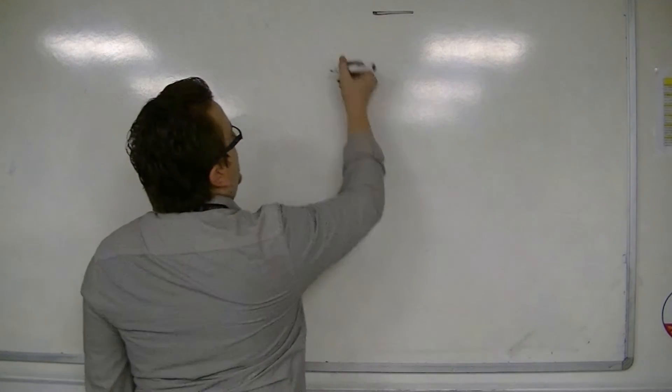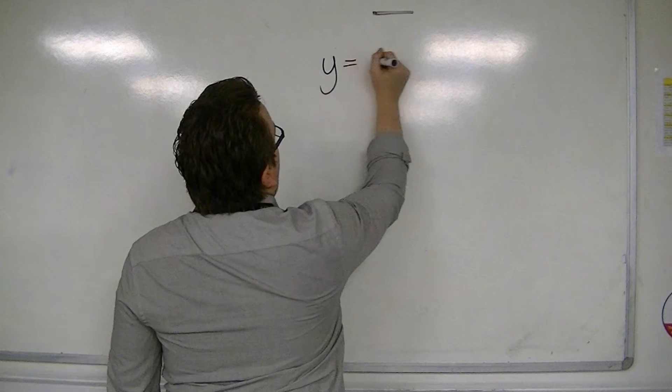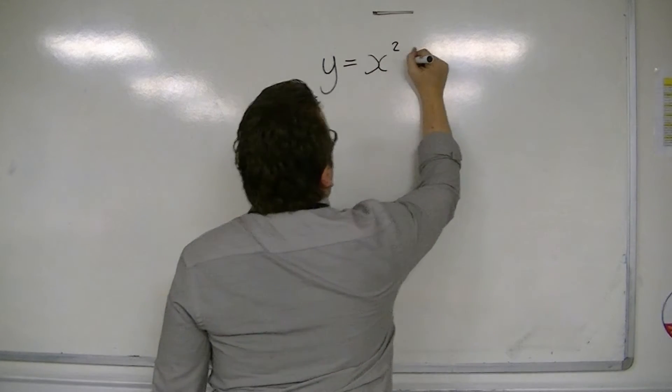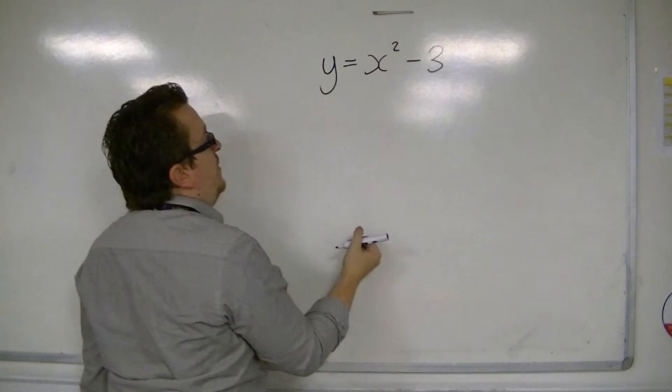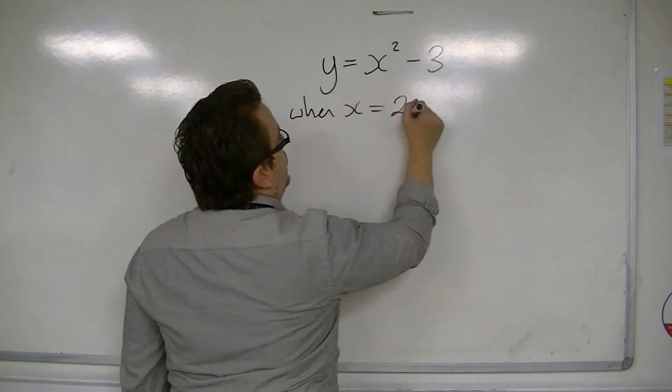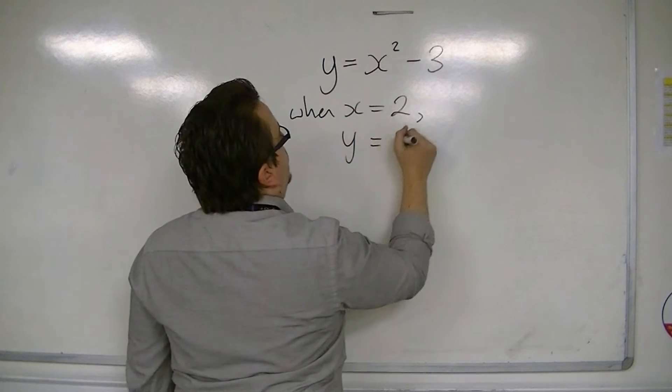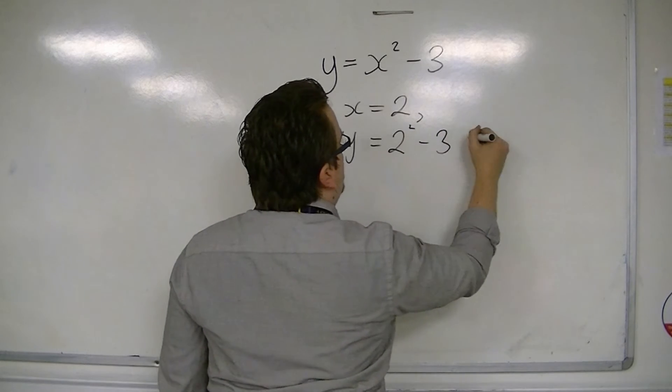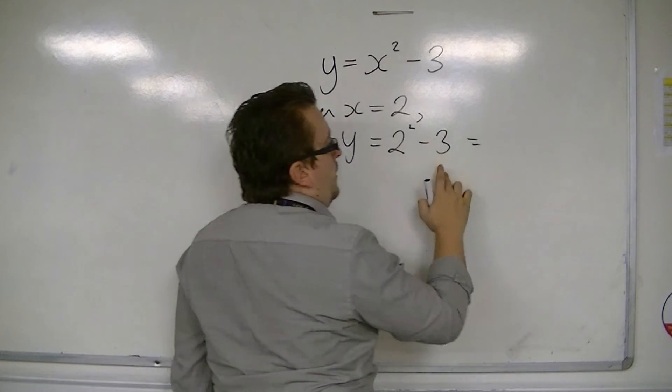For example, if I was looking at y equals x squared minus 3, and then I would say when x equals 2, y equals 2 squared minus 3, which is equal to 4 take away 3, which is 1.